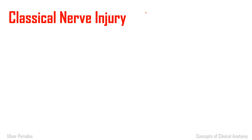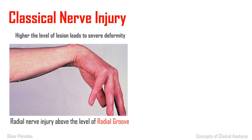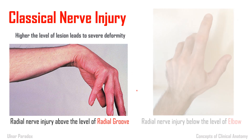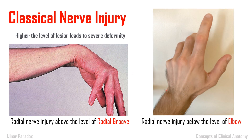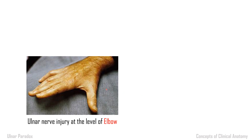For example, in radial nerve injury, when the lesion is above the level of the radial groove, it leads to wrist drop, thumb drop, and finger drop. If the radial nerve is injured at the lower level, below the level of the elbow, then it leads to only weakness in extension of fingers — that is finger drop. Most of the time, wrist and thumb extension is preserved.